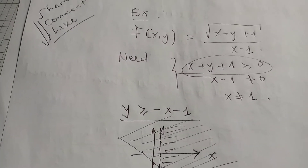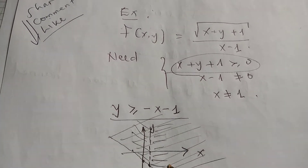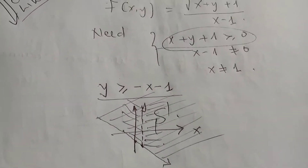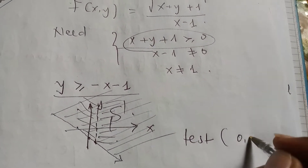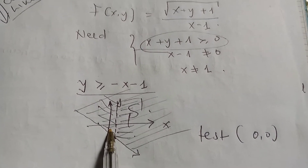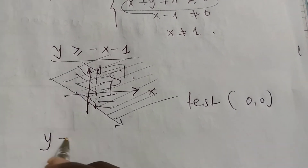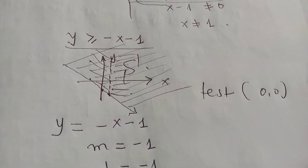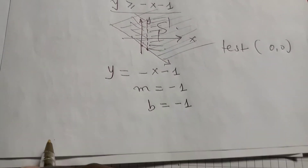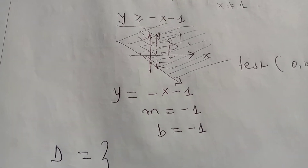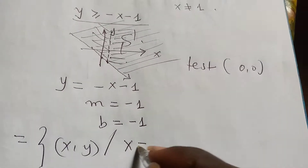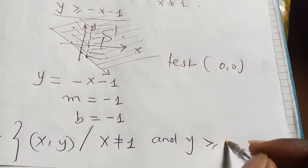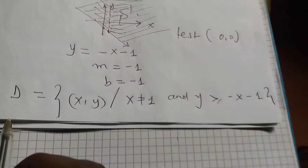Shading upward from the line, we find the solution where it intersects. Using the test point (0, 0), we confirm it defines the solution region. For the line y = -x - 1, the slope m equals negative one and the y-intercept b equals negative one. Therefore, the domain is the set of all (x, y) where x is not equal to one and y is greater than or equal to -x - 1.